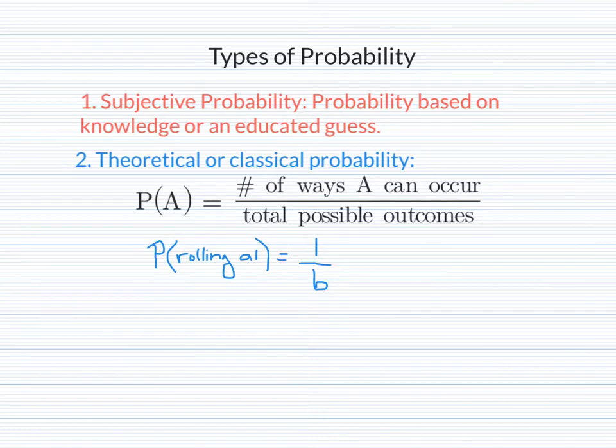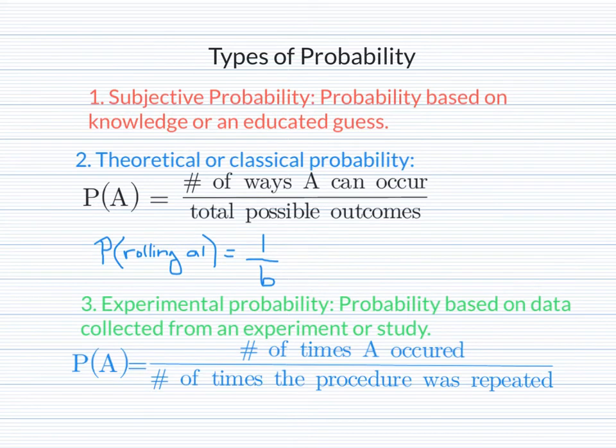Now there's one more type of probability. In experimental probability, probability is based on data collected from an experiment or from a study. So an example of experimental probability would be flipping a coin and recording all of the possible outcomes. Maybe you flip it 100 times and you get heads 60 out of the 100 times. Then the probability of getting heads would be 60 out of 100. Even though the theoretical would say that flipping a head should be 50-50, so 50 out of the 100. Experimental takes a look at an experiment done, not the theory behind it.